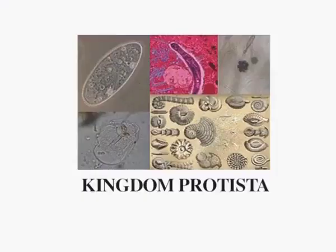I will talk about Kingdom Protoctista. Kingdom Protoctista is also known as Protista and just like Monerans, they too are unicellular organisms. If they are unicellular organisms, then why are they not placed under Monerans? They are not placed under Monerans because they are eukaryotic cells.